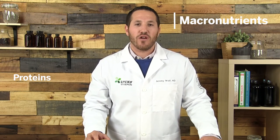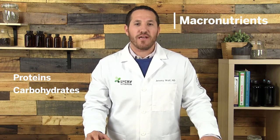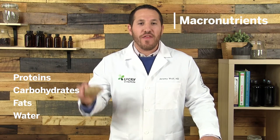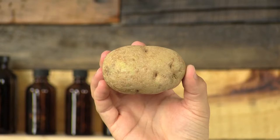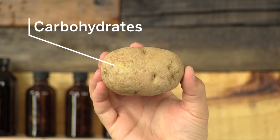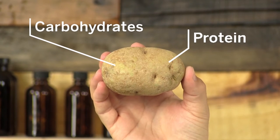Macronutrients are substances that are required in large amounts by our body and in general make up the bulk of our diets. Examples of macronutrients include proteins, carbohydrates, fats, and water. Think of a potato which is packed full of carbohydrates, but also has a small amount of protein.